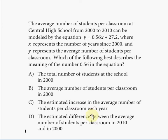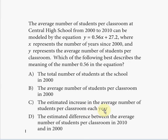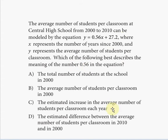The slope means change in y divided by change in x — and that's exactly what choice C says in words. The estimated increase — that's the change in y — in the average number of students per classroom each year — that's per each fixed unit of x equal to one. As x travels one unit to the right, there's an estimated increase in the average number of students per classroom of 0.56, which is the change in y. That's exactly what the question asked.